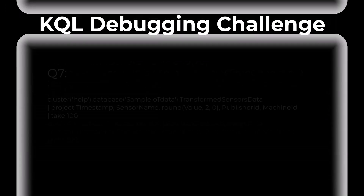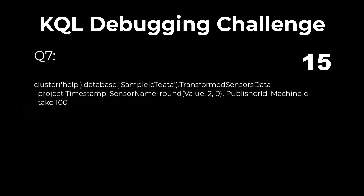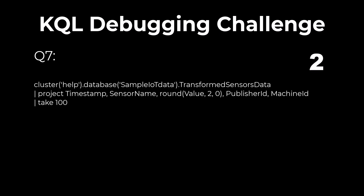Problem 7. Find the bug in this query. When we round, we place the field we want to round followed by the number of decimal places to round. The additional zero is not needed and will throw an error.